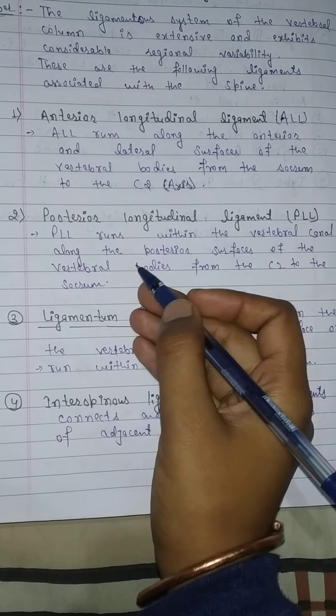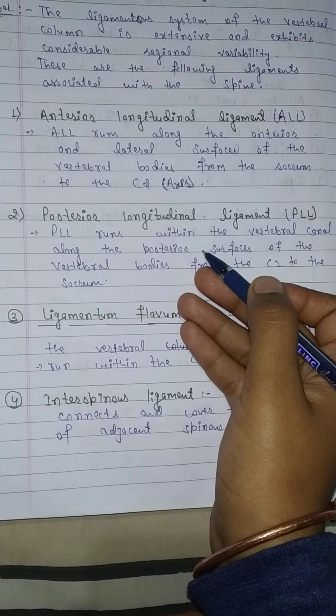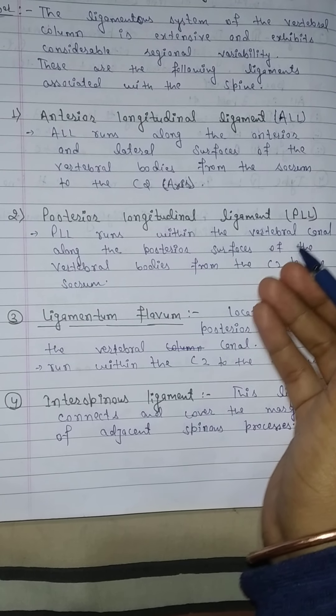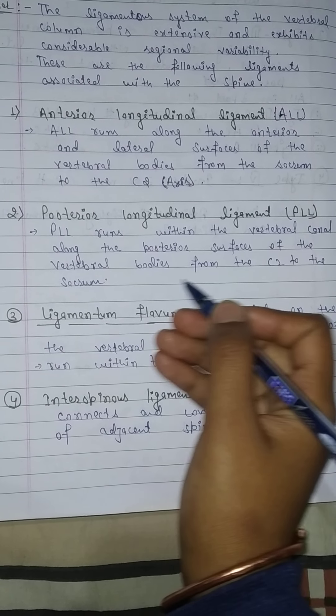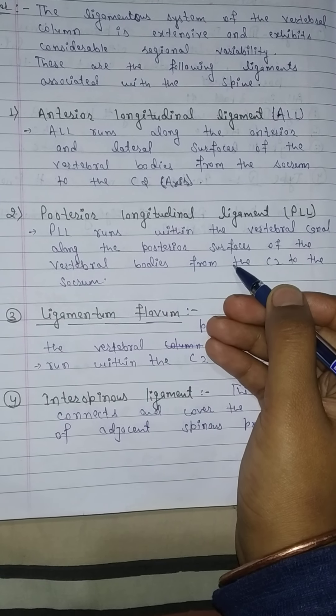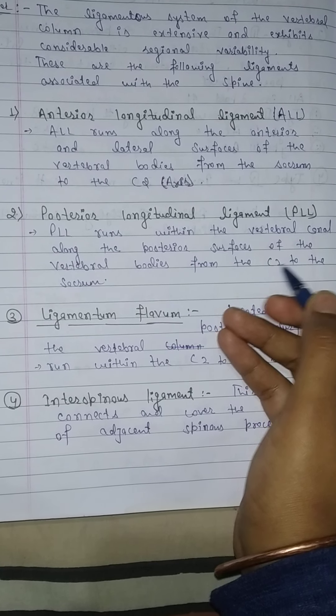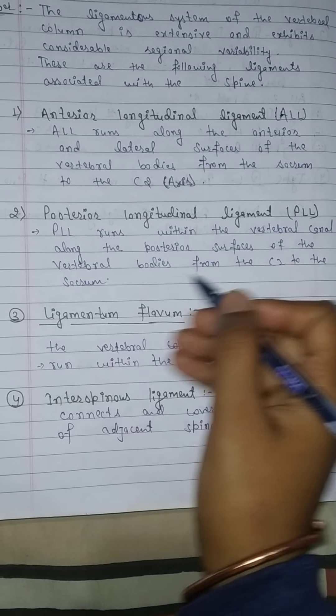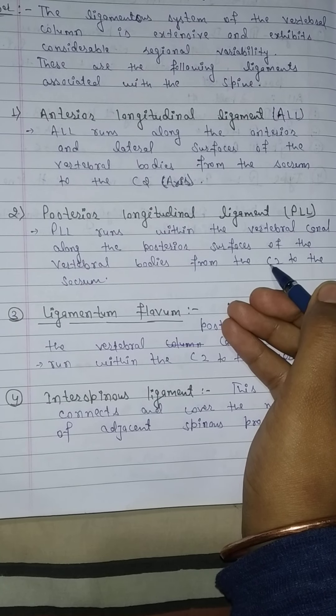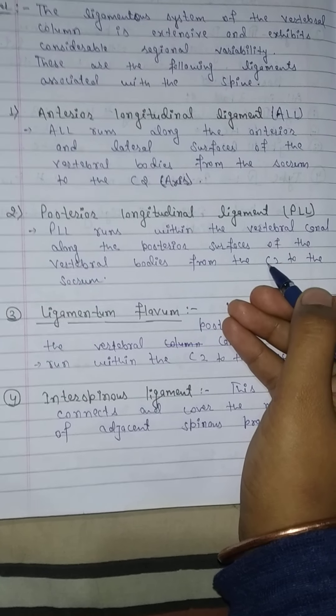The Posterior Longitudinal Ligament, also known as PLL, runs within the vertebral canal along the posterior surfaces of the vertebral bodies from C2, the axis, to the sacrum.